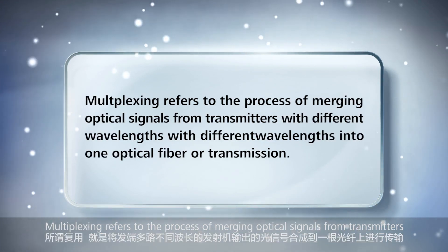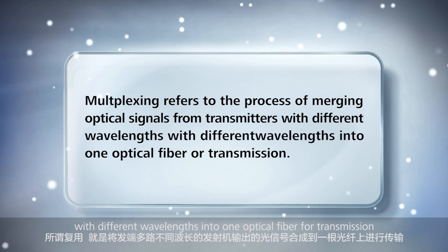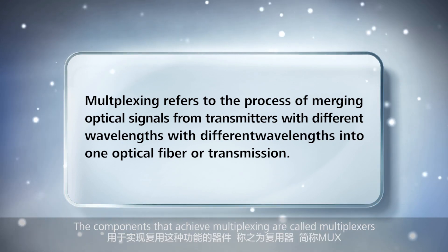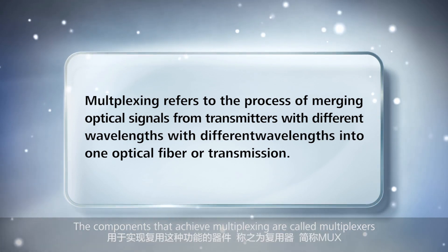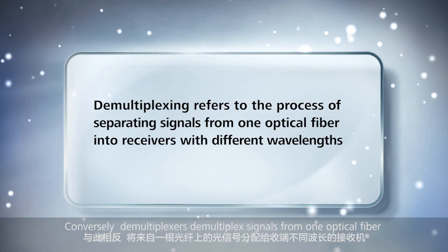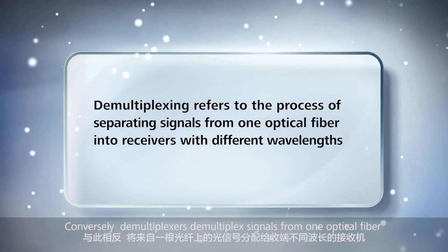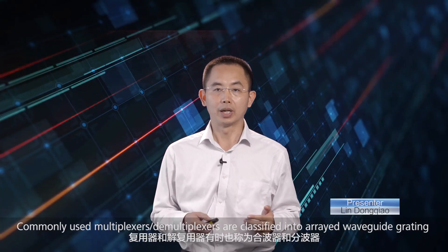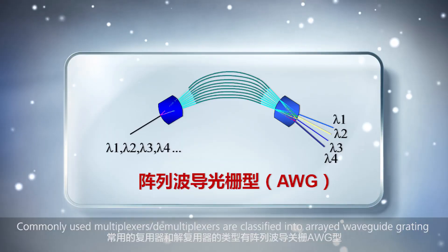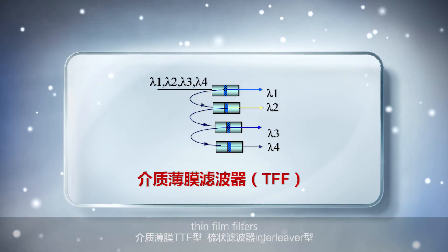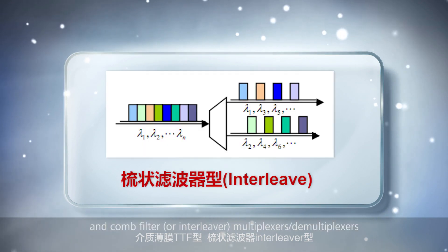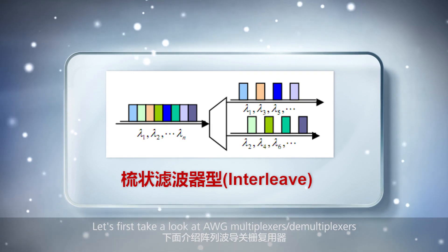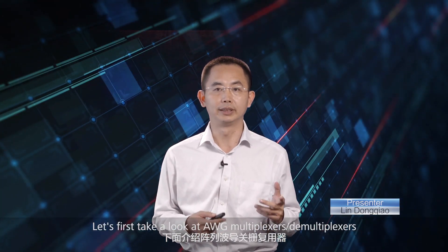Multiplexing refers to the process of merging optical signals from transmitters with different wavelengths into one optical fiber for transmission. The components that achieve multiplexing are called multiplexers. Conversely, demultiplexers demultiplex signals from one optical fiber into receivers with different wavelengths. Commonly used multiplexers and demultiplexers are classified into arrayed waveguide grating (AWG), thin film filter (TFF), and comb filter or interleaver types.